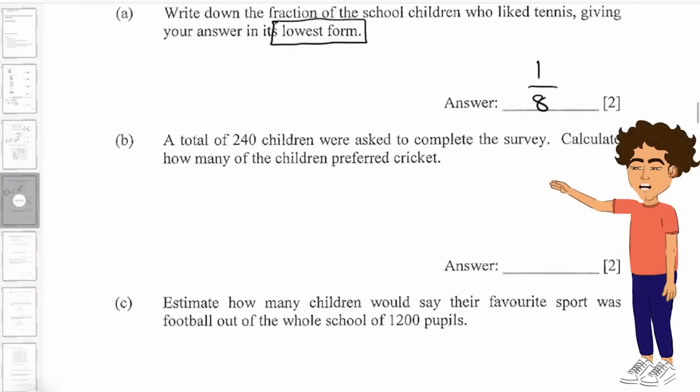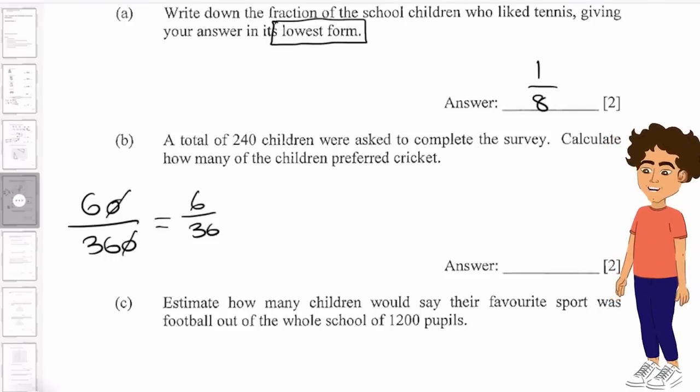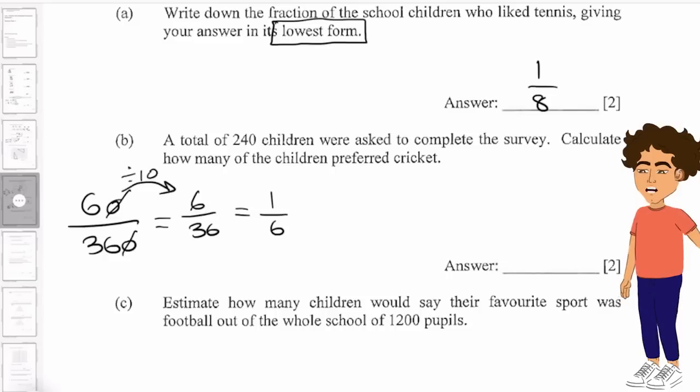So we can simply write down 60 over 360. And if we simplify this, we can cross out to zero and have 6 over 36, or 1 over 6. I've simply divided both sides by 10, and then divided both sides by 6.